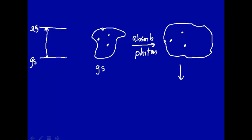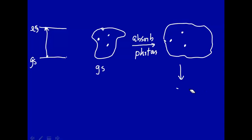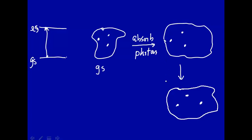After the electrons redistribute themselves upon absorbing a photon, the nuclei are still in the same position. After that happens, the nuclei will redistribute to their new equilibrium positions. So that means that you have a vertical transition in the potential energy diagram.